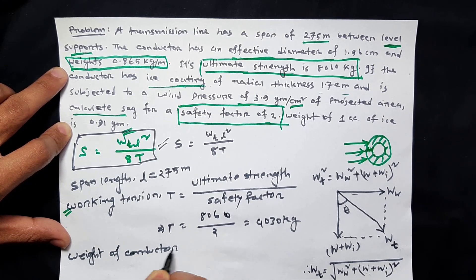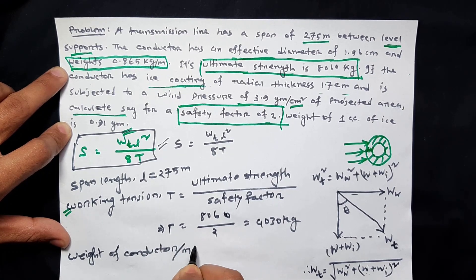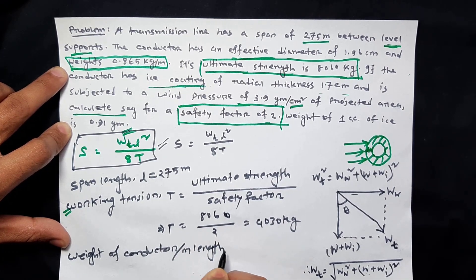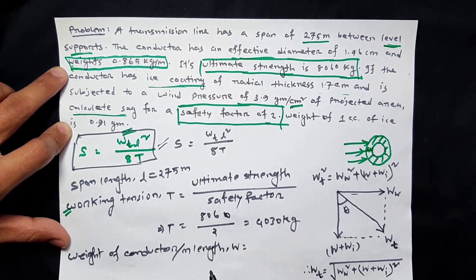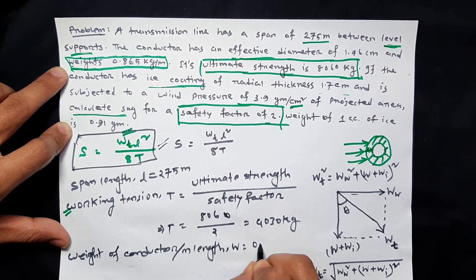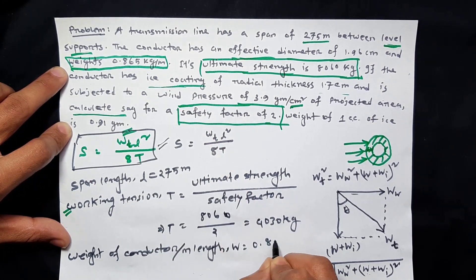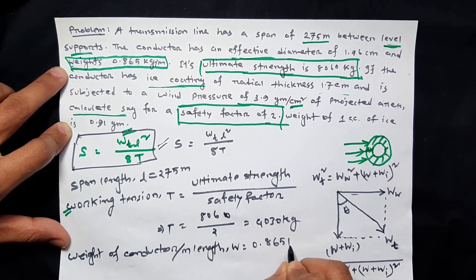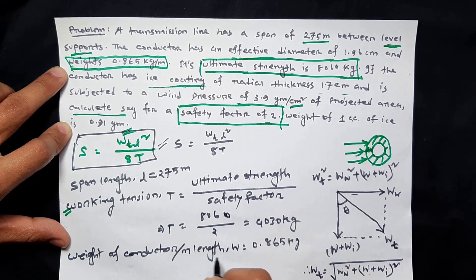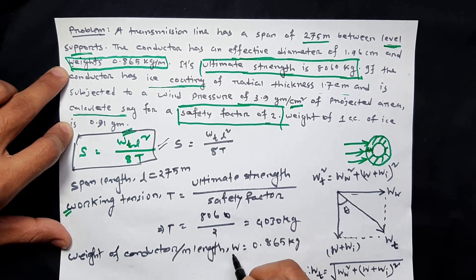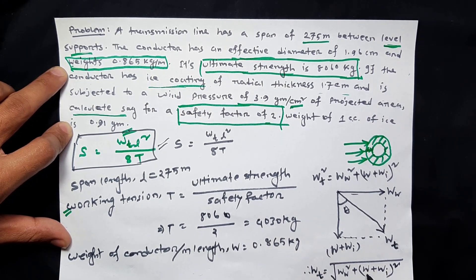Wt — weight of conductor per meter length — w is simply 0.865 kg per meter.